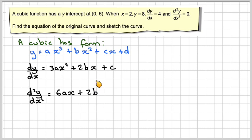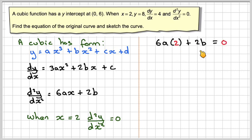We'll start with the second derivative. When x is 2, the second derivative is 0, so we substitute 2 for x. We get 6a times 2 plus 2b equals 0, giving 12a plus 2b equals 0.